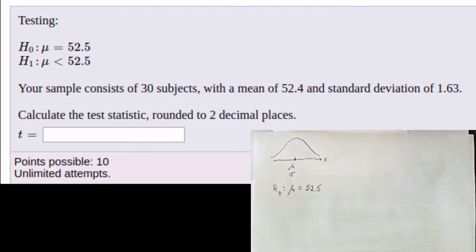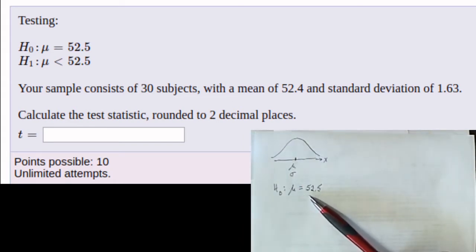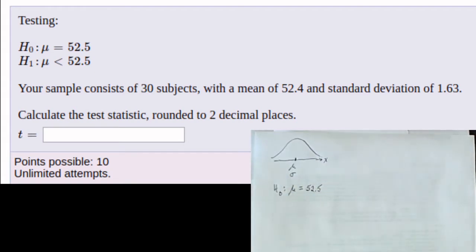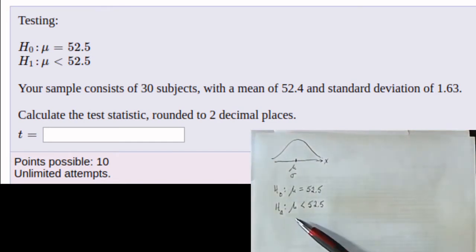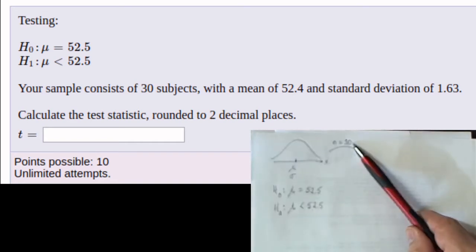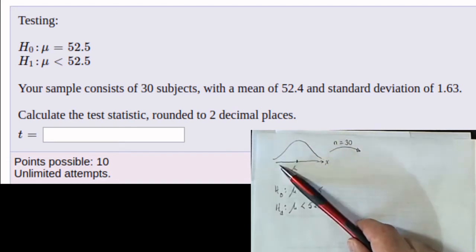In the hypothesis test we make a decision about what the mean is. In this problem, one opinion claims that the mean of the population is 52.5 — the null hypothesis always includes an equal sign. The alternative hypothesis is that the mean is significantly less than 52.5. To decide which opinion is correct, we take a sample; in this case our sample has a size of 30.